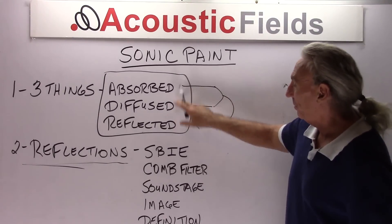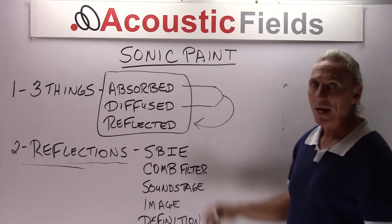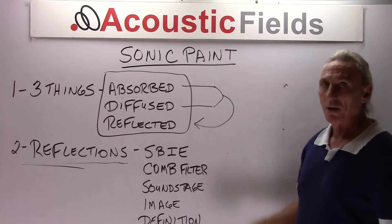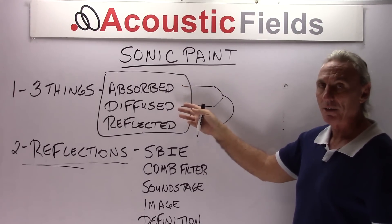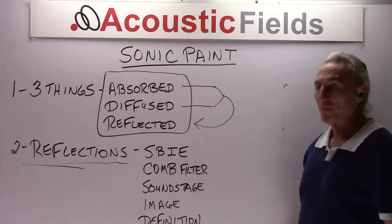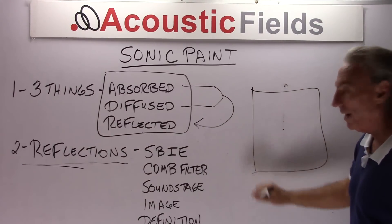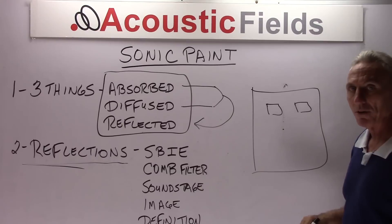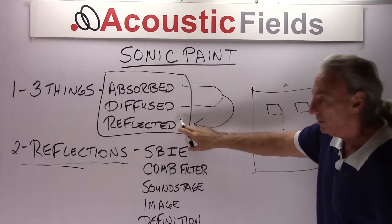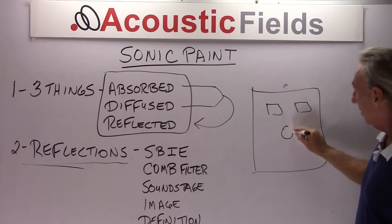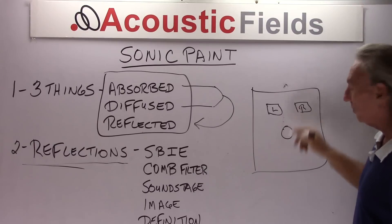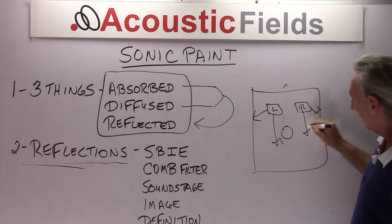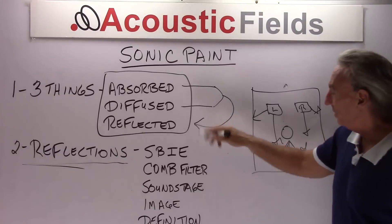So we use two of the three properties that our laws of physics give us to really manage the third. Think about it as sonic paint: you have absorption and diffusion technologies to manage reflected energy. And it's always the reflected energy, no matter what the usage — whether it's mixing, mastering, a church venue where reverberation times caused by lots of reflected energy are issues, or just listening. It's all the reflected energy from source and room.